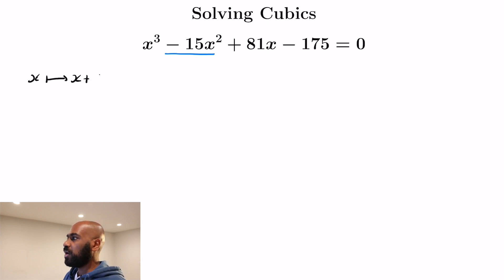First of all, one method that's kind of a clever idea is to eliminate the x squared term, and here we're going to do that by shifting the variable x to be x plus 5. If we do that, let's analyze what happens to the first few terms.